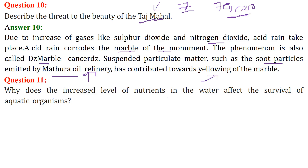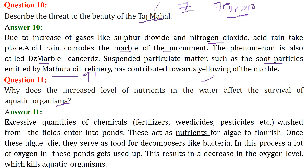Why does the increased level of nutrients in the water affect the survival of aquatic organisms? Aquatic organisms are indeed the most important part of the food chain and biodiversity. Excessive quantities of chemicals such as fertilizers, weedicides, and pesticides are washed from fields and enter water bodies like ponds, lakes, and rivers. These act as nutrients for algae to flourish, and once the algae die, they serve as food for decomposers like bacteria. In this process, a lot of oxygen is used up, and the decrease in oxygen level will kill aquatic organisms.